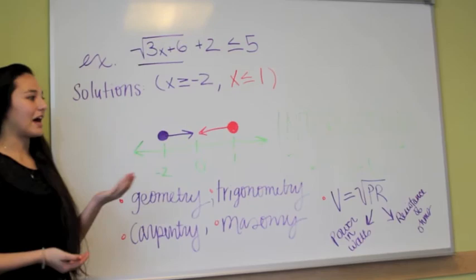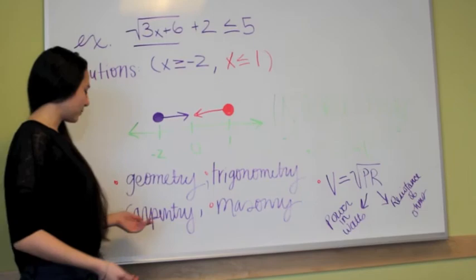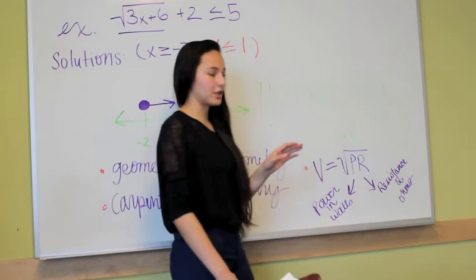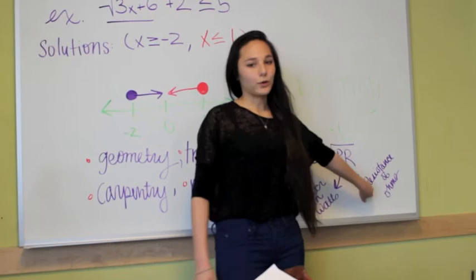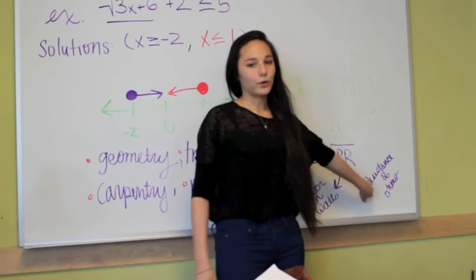Now in the real world, this type of math is used in geometry, trigonometry, like in triangles with also as well as in carpentry and masonry. And also radical expressions are used in electrical engineering where in this simple equation, voltage equals the square root of power in watts times the resistance of the ohms. That's section 7-7 and I hope it makes sense.